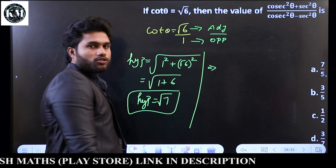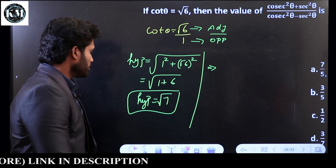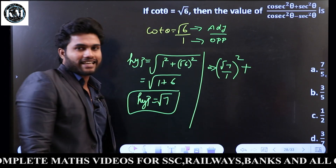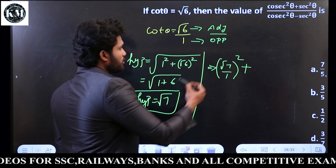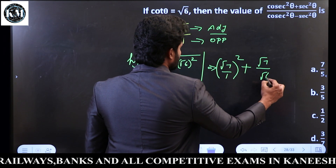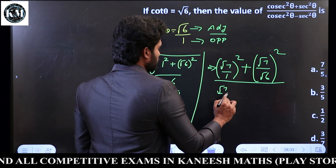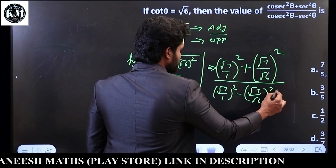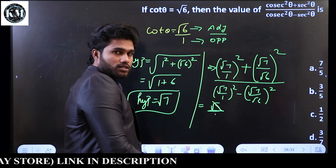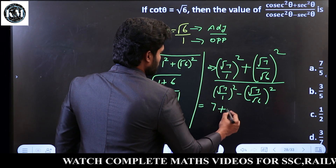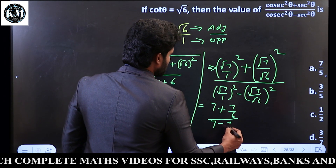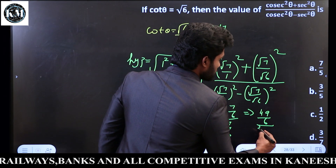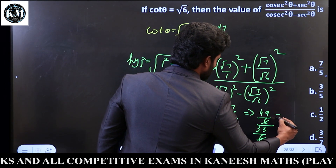Cosecant square θ — the cosecant rule is hypotenuse by opposite. So cosec θ = root 7 by 1, and cosec² θ = (root 7)² = 7. Sec rule: hypotenuse by adjacent. So sec θ = root 7 by root 6, and sec² θ = 7 by 6. Now: cosec² θ + sec² θ = 7 + 7/6 = 42/6 + 7/6 = 49/6. And cosec² θ minus sec² θ gives 42/6 minus 7/6 = 35/6. So the ratio is 49/35, and dividing by 7: the balance is 7 by 5.